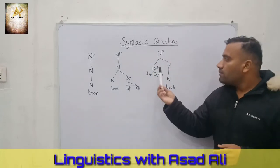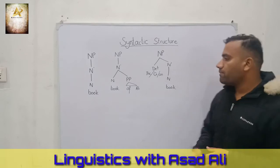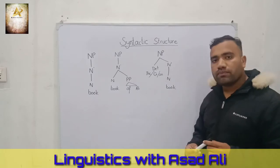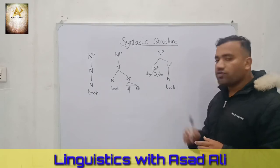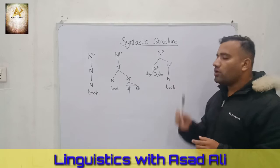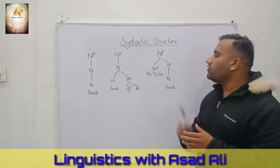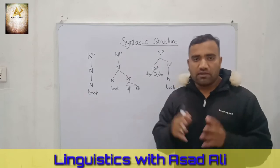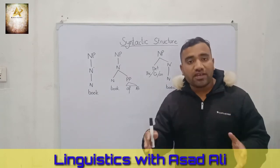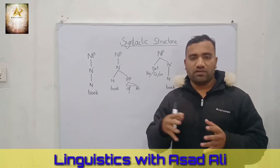See the second structure of the nominal phrase. In this structure, 'book' is the noun. N is the minimum level, N-bar is the intermediate level, and the third is the maximum level. Our phrase has fulfilled the three projection levels.